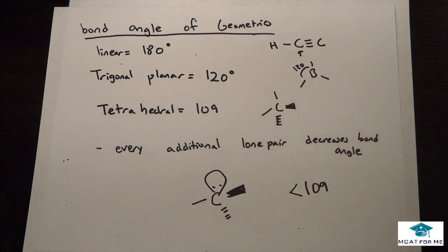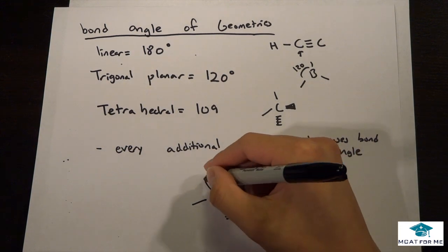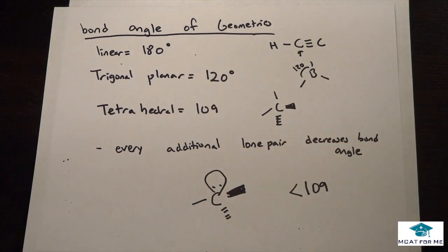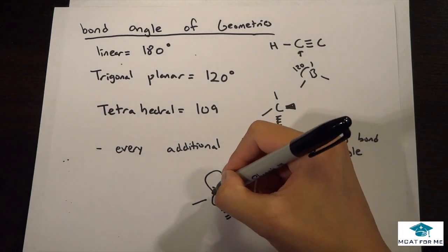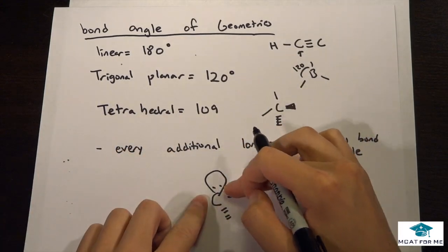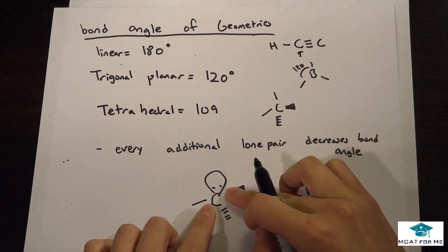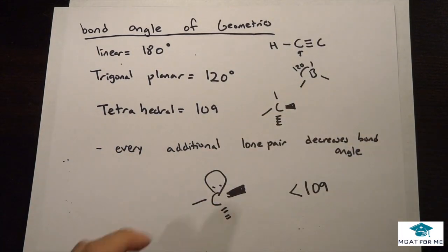It will always be different because some will have a greater repulsion than others. But every lone pair added will decrease the angle because this electron will repulse all these other bond angles, making them go farther down, being repulsed from that lone pair. So it would be less than 109.